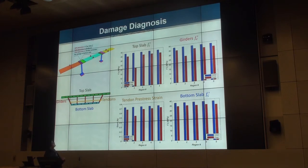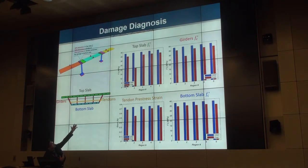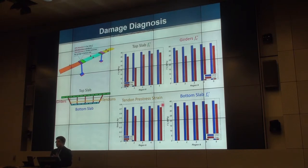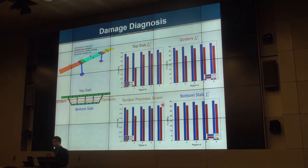Here are the actionable results we extracted from the estimation process: the initial values based on the nominal drawing and the final estimated values. There is damage in region two of the bridge, and we can clearly observe that we were able to estimate and localize damage in different components in region two. These are the types of actionable information that can be used by stakeholders to decide what to do with this bridge.